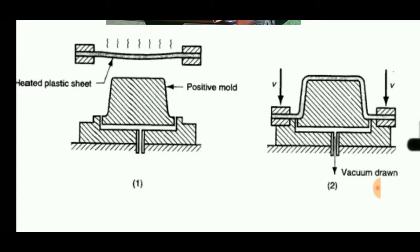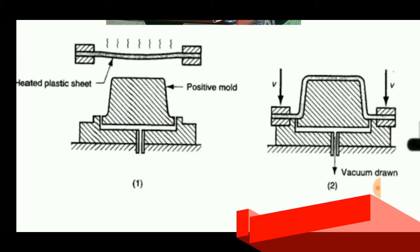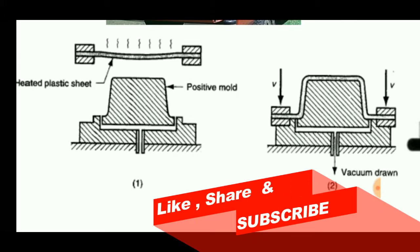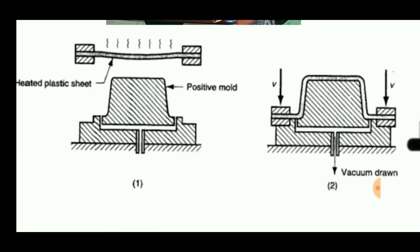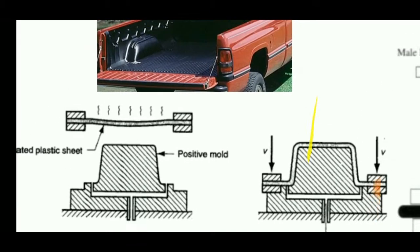Hello viewers, welcome to Engineering Study Materials. Today we are going to discuss the drape forming process. It is a forming process used for products that can be used as carriers in vehicles.